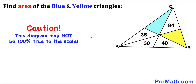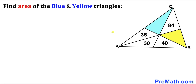Note that this figure may not be 100% true to scale. Let's get started with the solution. Since we are interested in finding the area of the blue and yellow triangles, let's label them: the area of the blue triangle is x square units and the area of the yellow triangle is y square units.